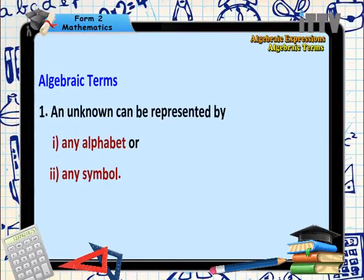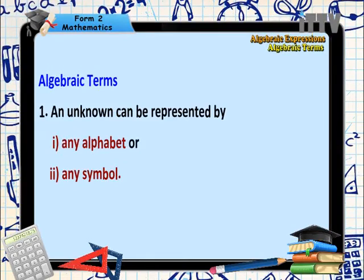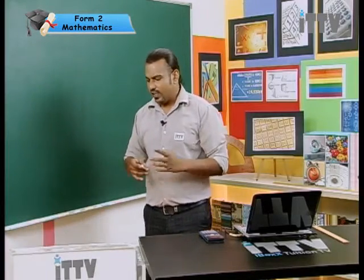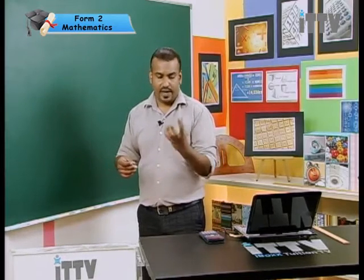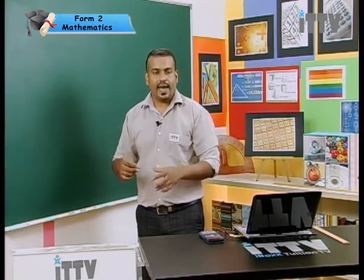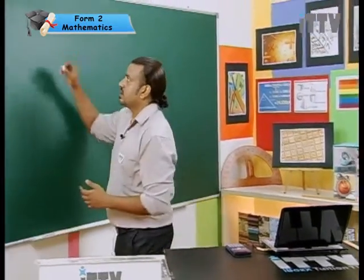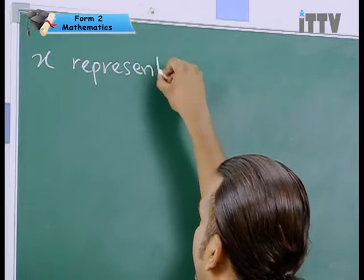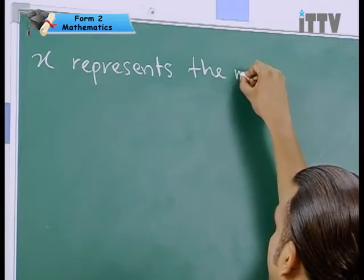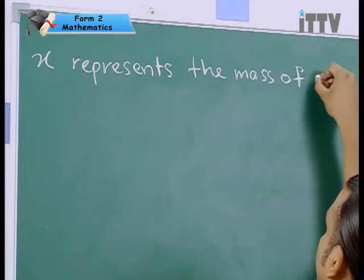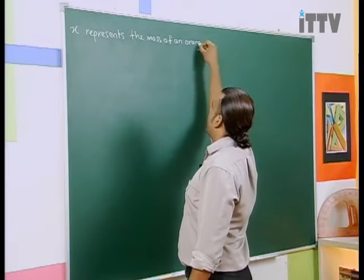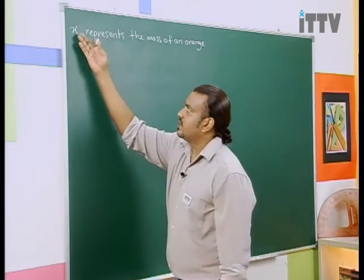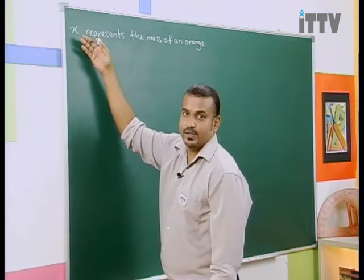In algebraic terms, there is something known as unknowns. So what are these unknowns? Unknowns can be symbols or alphabets which are used for an unknown. Now say for example, I ask you the mass of an orange. So you have an orange fruit but you don't know what's the mass. So we can put an alphabet as a symbol for it. Now say for example, we can say that X represents the mass of an orange.